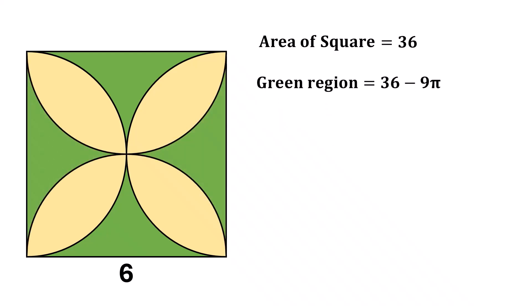Now, the total green region is actually double of that, since we have two identical green parts. So, the total green region is 2 times 36 minus 9 pi, which simplifies to 72 minus 18 pi.